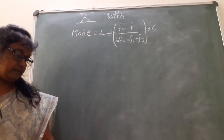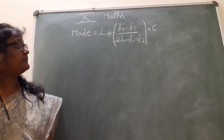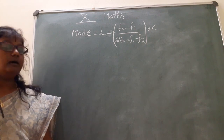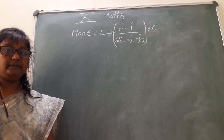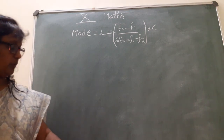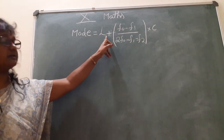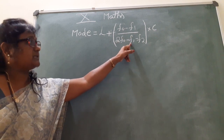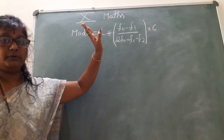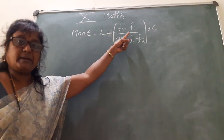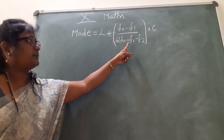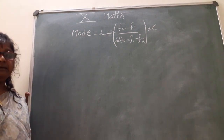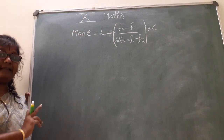Hi children. In averages we finished mean and median for grouped data. Today, how to find the mode? The same grouped data are given. This is the formula to find the mode: Mode is equal to L plus F0 minus F1 divided by 2F0 minus F1 minus F2, into C. Then what is F0, F1, F2, etc.? We already know how to find the L value and C value.